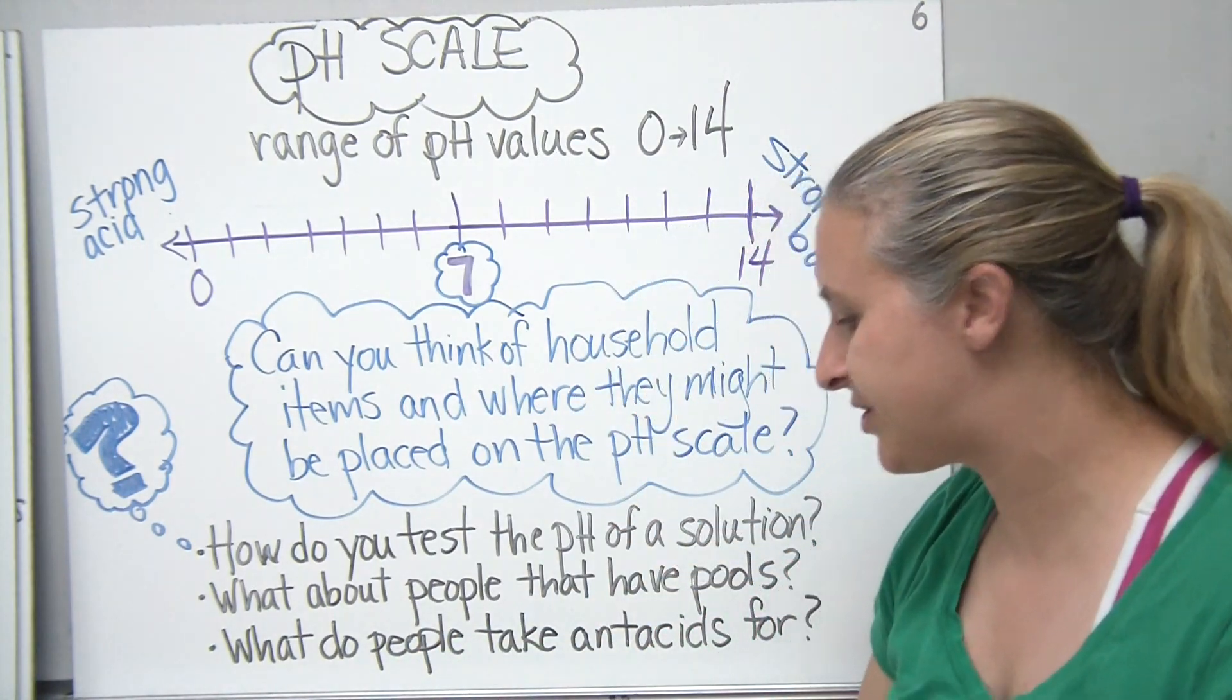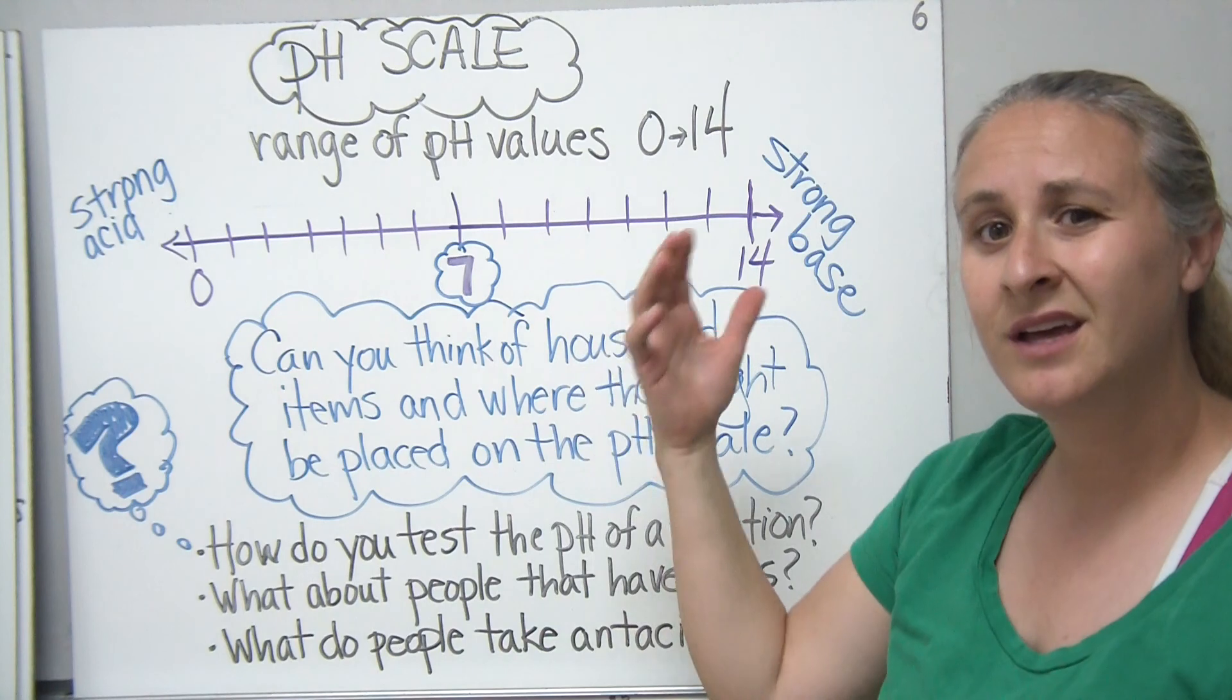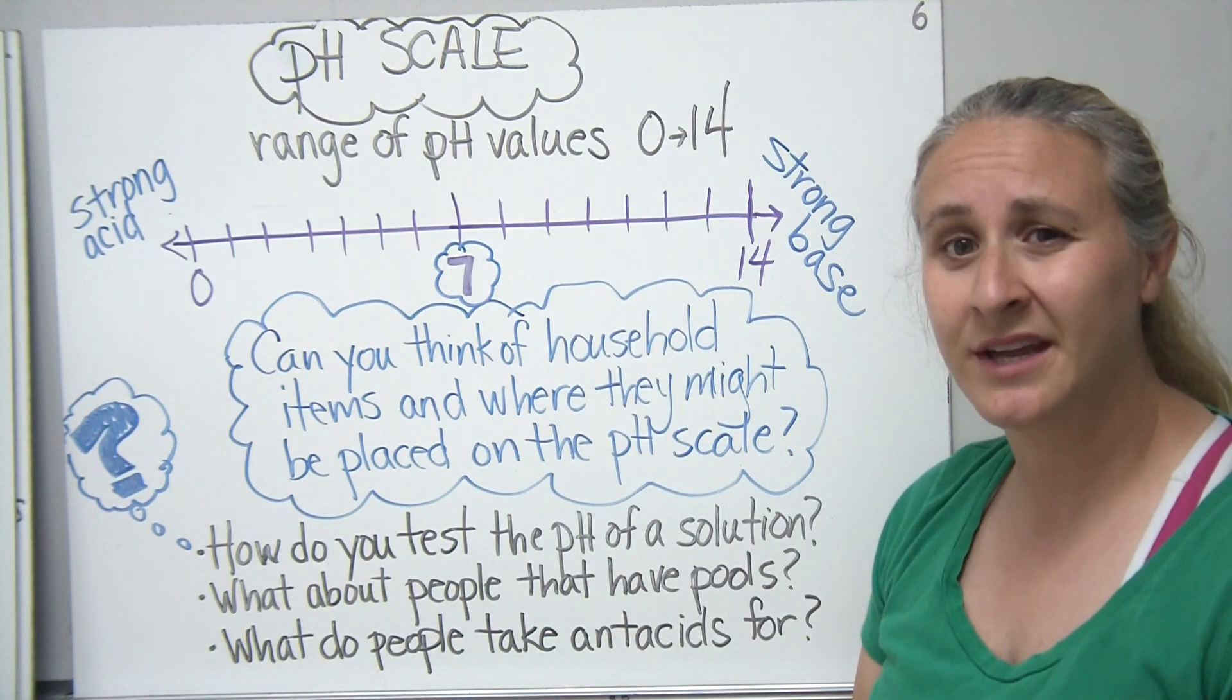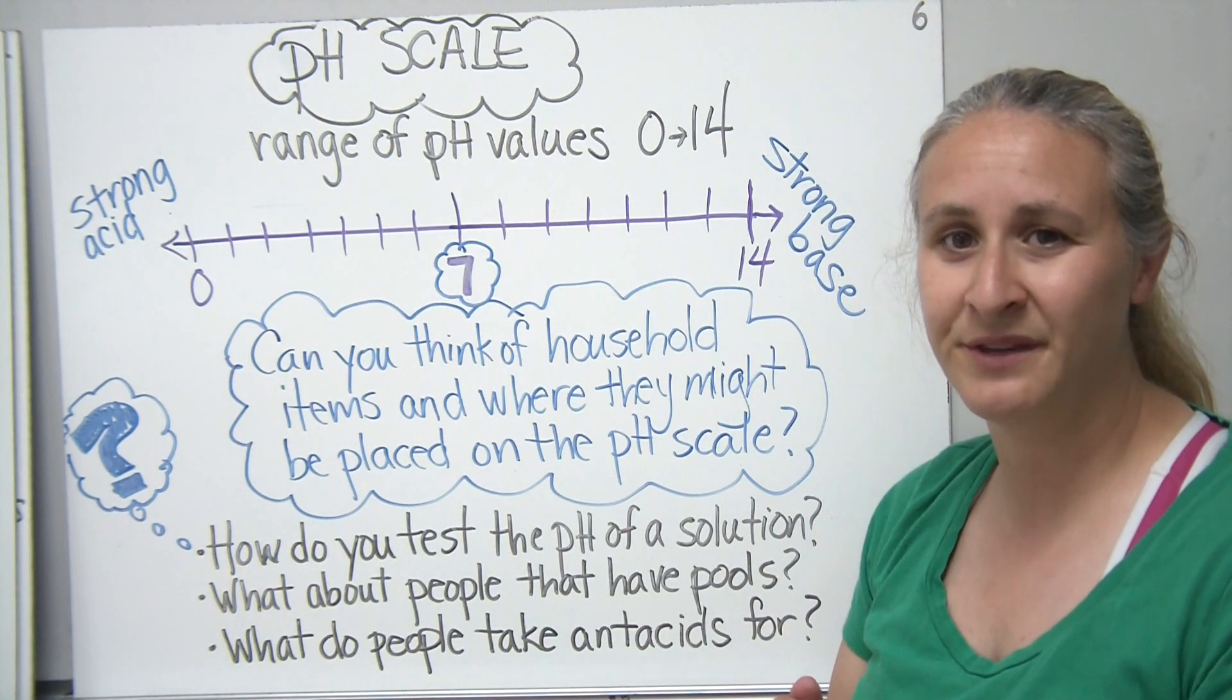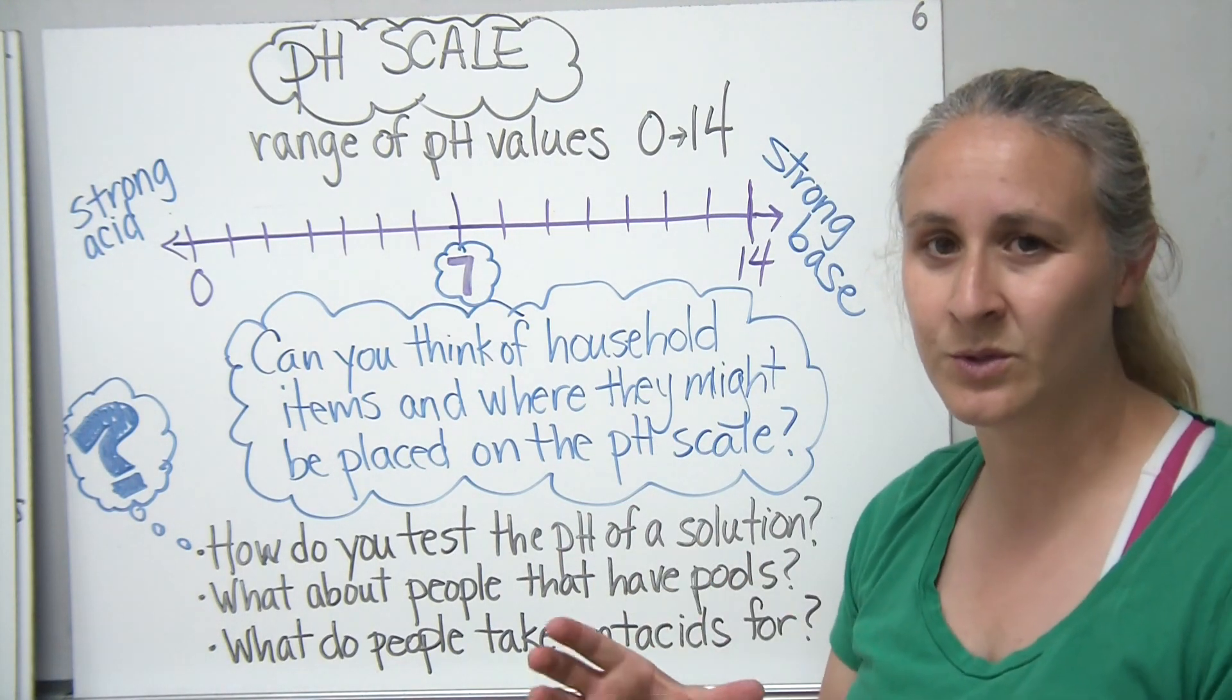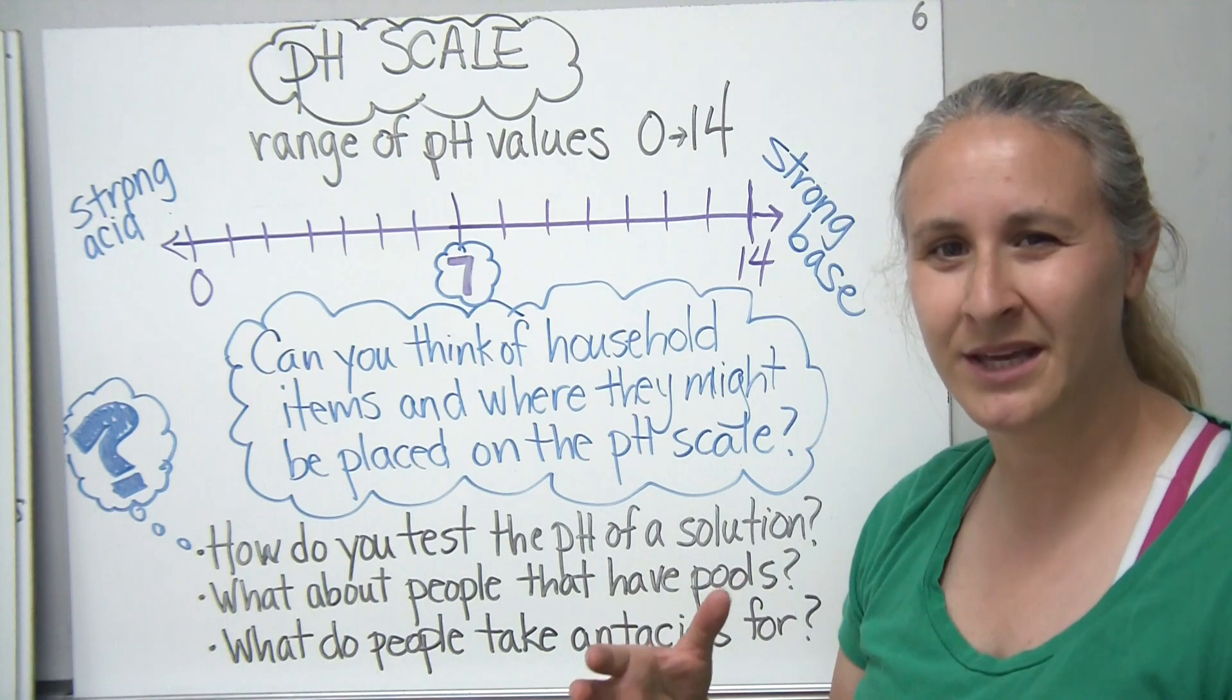Moving on from our pH definitions, one of the things that we like to look at, especially with the living environment curriculum, is what are some of the common things that we find around us and in the world around us? And what are their pH ranges?